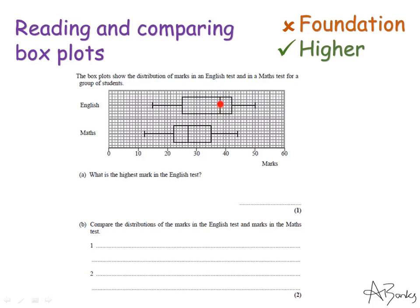This line inside the box is the median and then this is the lower quartile and upper quartile. So the highest mark in the English test is this line here and if I follow down to my scale it's 50. So the highest mark recorded in the English test was 50.